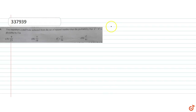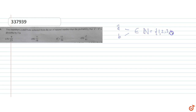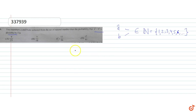In this question we have two numbers a and b selected from the set of natural numbers, which is 1, 2, 3, 4, 5 and so on. We need to find the probability that a squared plus b squared is divisible by 5.